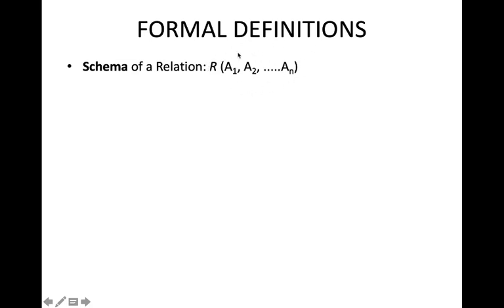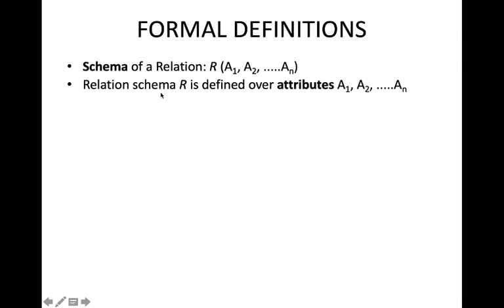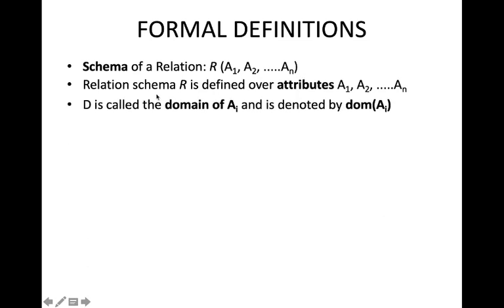A relation schema R is defined over attributes A1, A2, ..., An. D is called the domain of Ai, denoted as dom(Ai). If you take a particular attribute A1, it can take only a particular set of values. Domain means the set of permissible values — similarly in relations, each attribute has a domain of values and we can only take values from that domain.